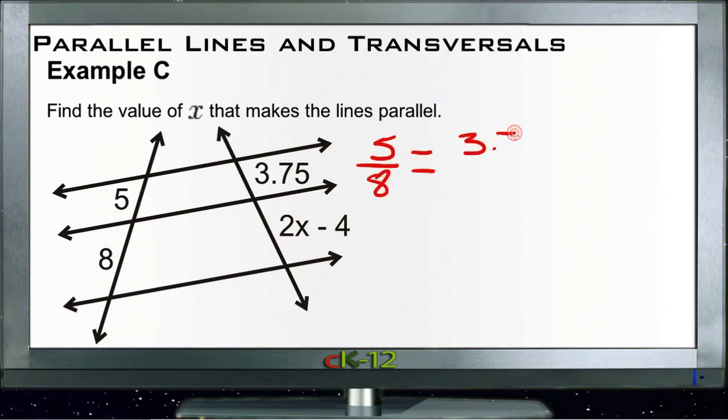Yeah, so then we can cross multiply. We get 5 times 2x minus 4, which means we need to do 5 times 2x and then 5 times negative 4. So 5 times 2x is 10x and 5 times negative 4 is negative 20.